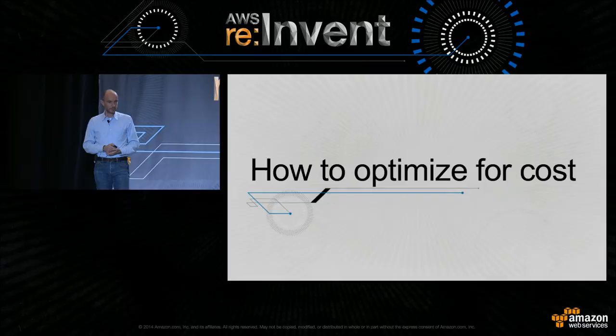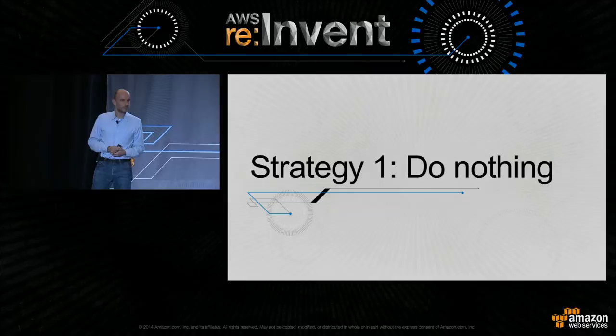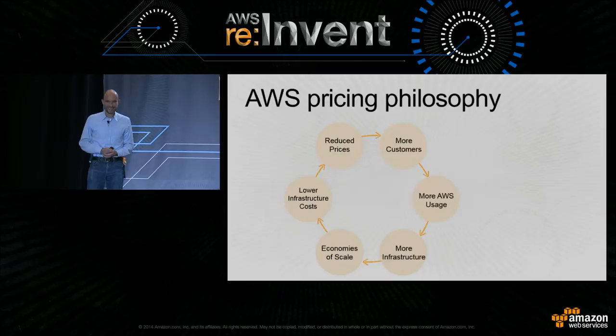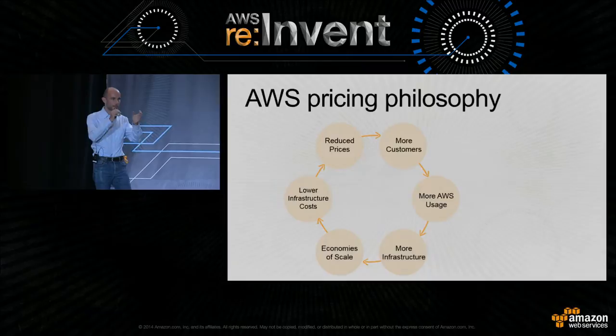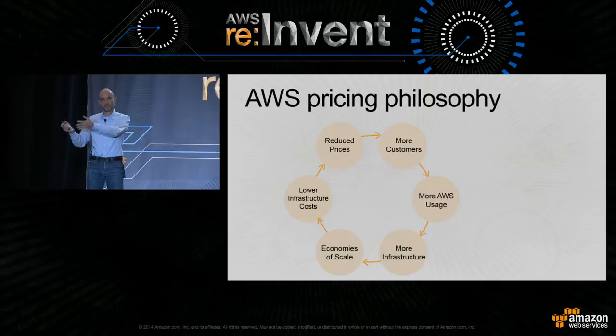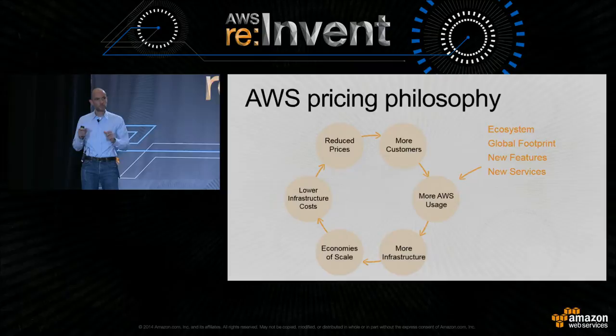Let's start looking at ways to optimize for cost. It turns out that the number one strategy could be to do nothing. It is our job to bring down prices. Whenever AWS reduces prices, we see more customers using our infrastructure, and the more customers use it, the more AWS users we see.